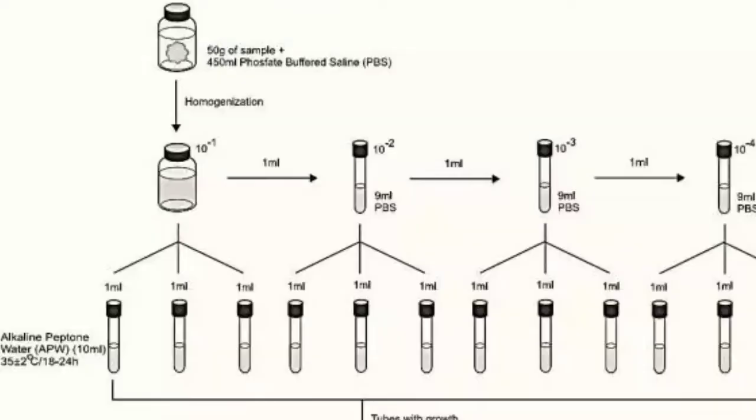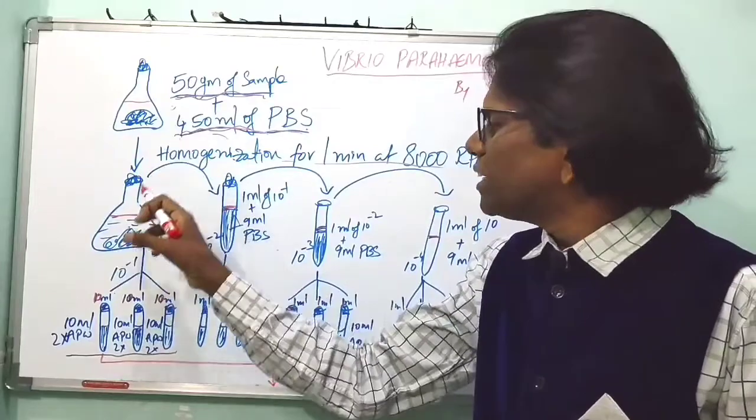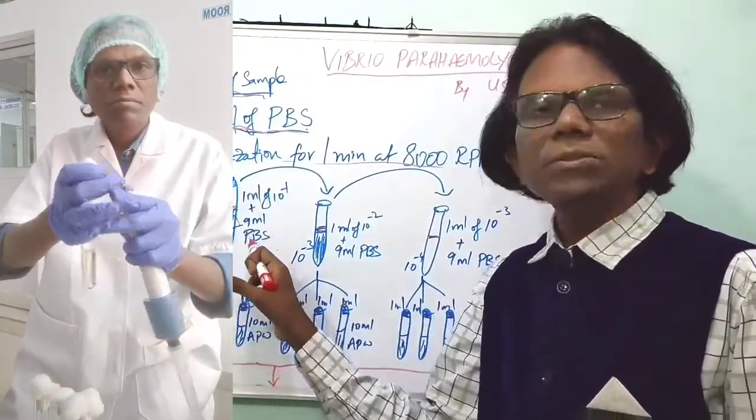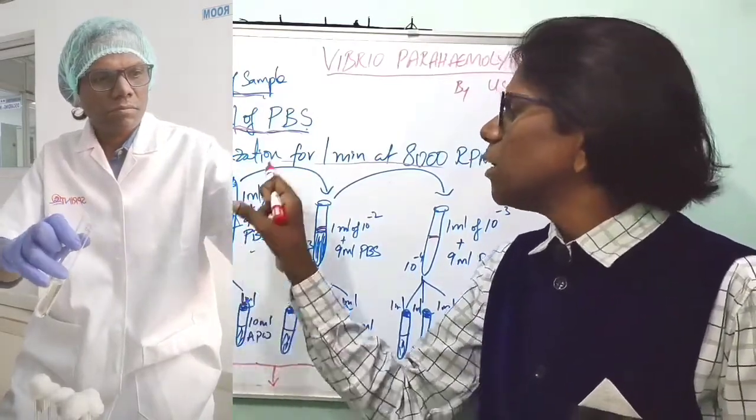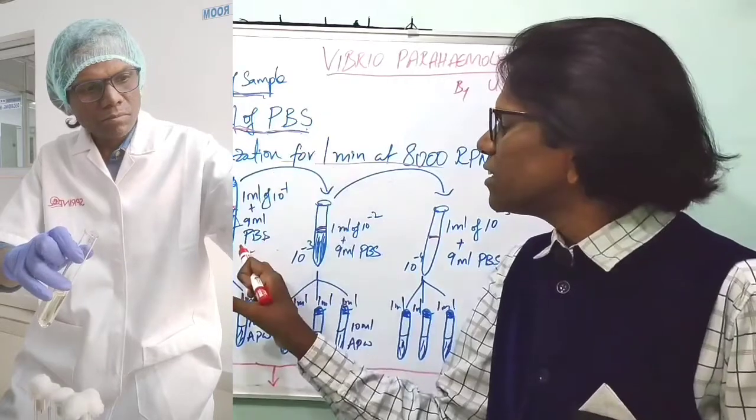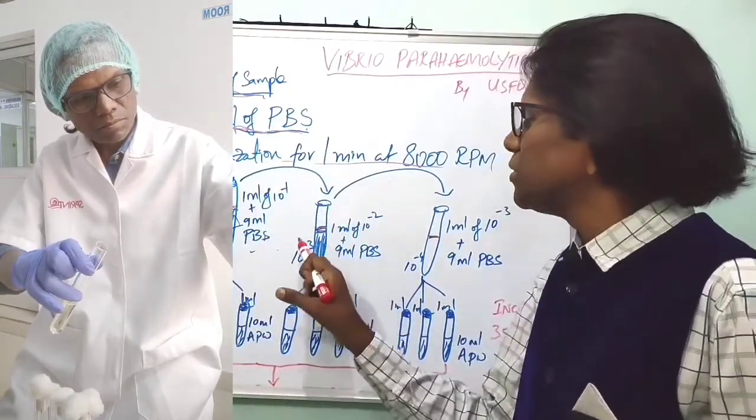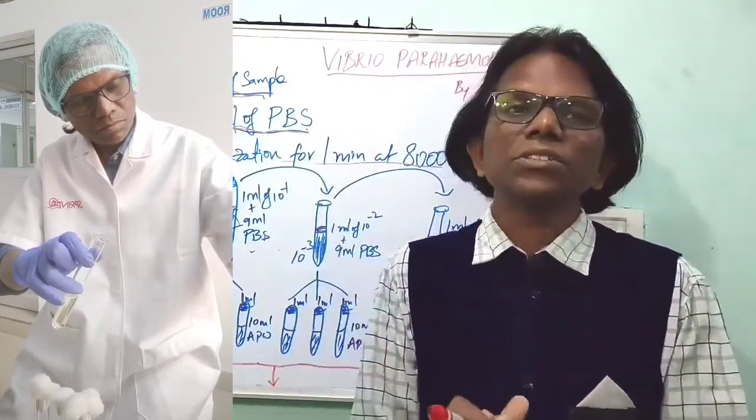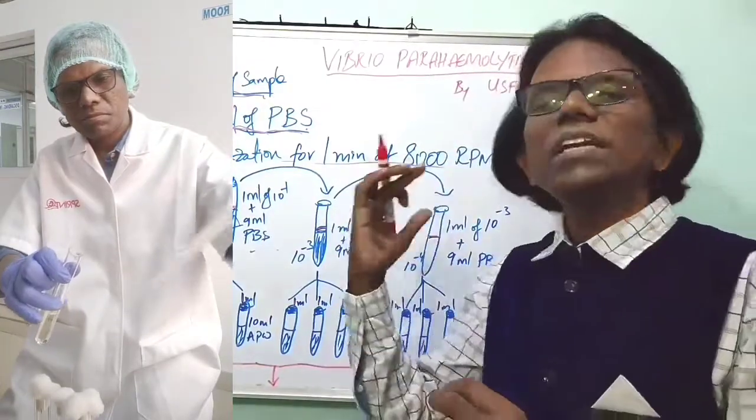From the 1 to 10 dilution, we have to do serial dilutions. Take 1 ml of 1 to 10 dilution inoculum, transfer to 9 ml of phosphate buffer solution. This gives rise to 1 to 100 dilution. Then again take 1 ml of 1 to 100 dilution, transfer to 9 ml of phosphate buffer solution. This gives 1 to 1000 dilution. Like that we have to make serial dilutions if required.